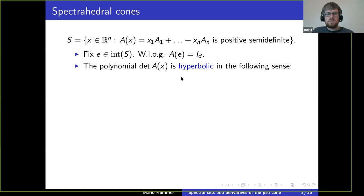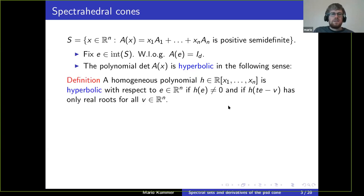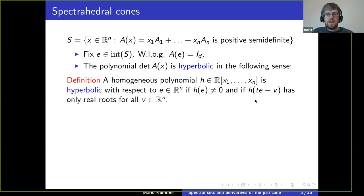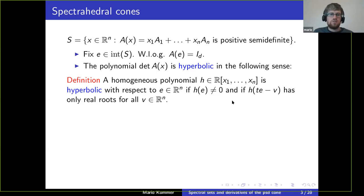This is a polynomial in x1 to xn, and I claim it has the following properties which make it hyperbolic in this sense: it's a homogeneous polynomial, hyperbolic with respect to e, meaning it doesn't vanish at e — this is clear because the determinant of the identity matrix is one — and whenever we restrict this polynomial to any line in direction e, the resulting univariate polynomial has only real zeros.